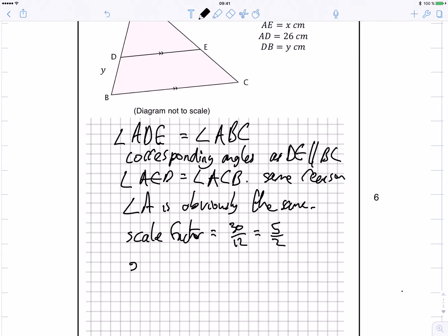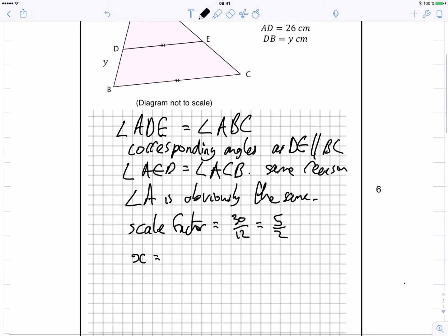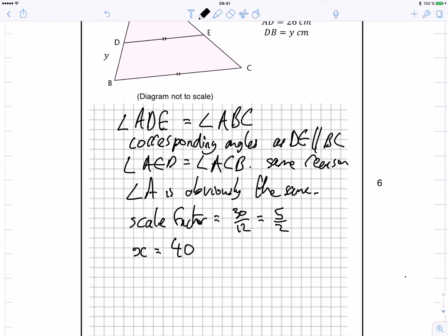So X is, well AC is 40, so it's just simply 40 and I times it by 2 fifths. Or it's the same, it's exactly the same as 40 divided by 5 over 2. Either way, they both give you exactly the same, which is 16 centimeters, don't forget your units.